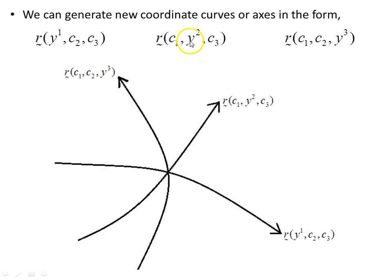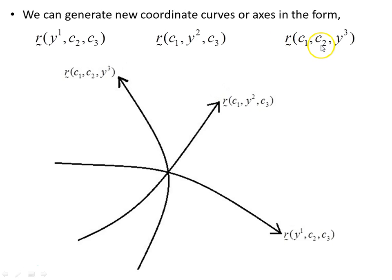Varying y2 by holding y1 and y3 constant gives us the next coordinate curve. And holding y1 and y2 constant while varying y3 gives us this coordinate curve here.